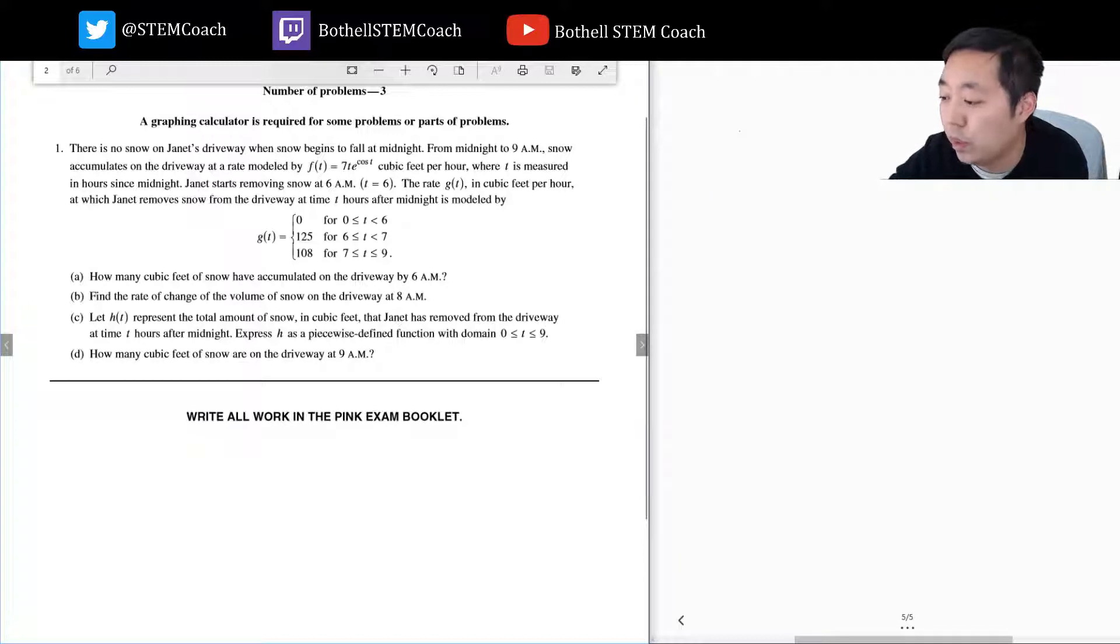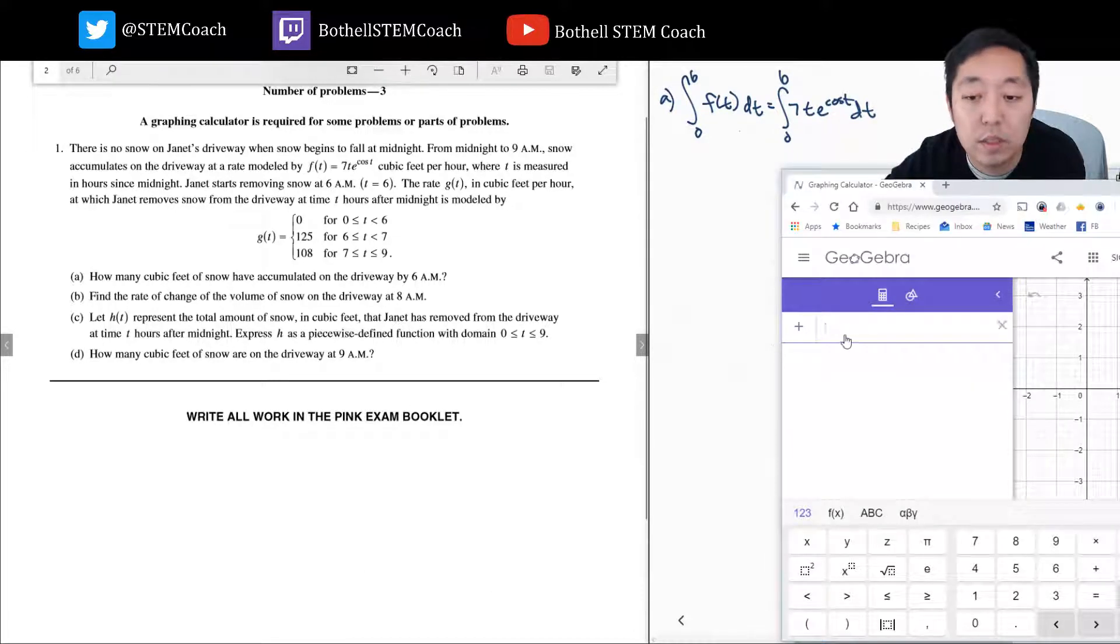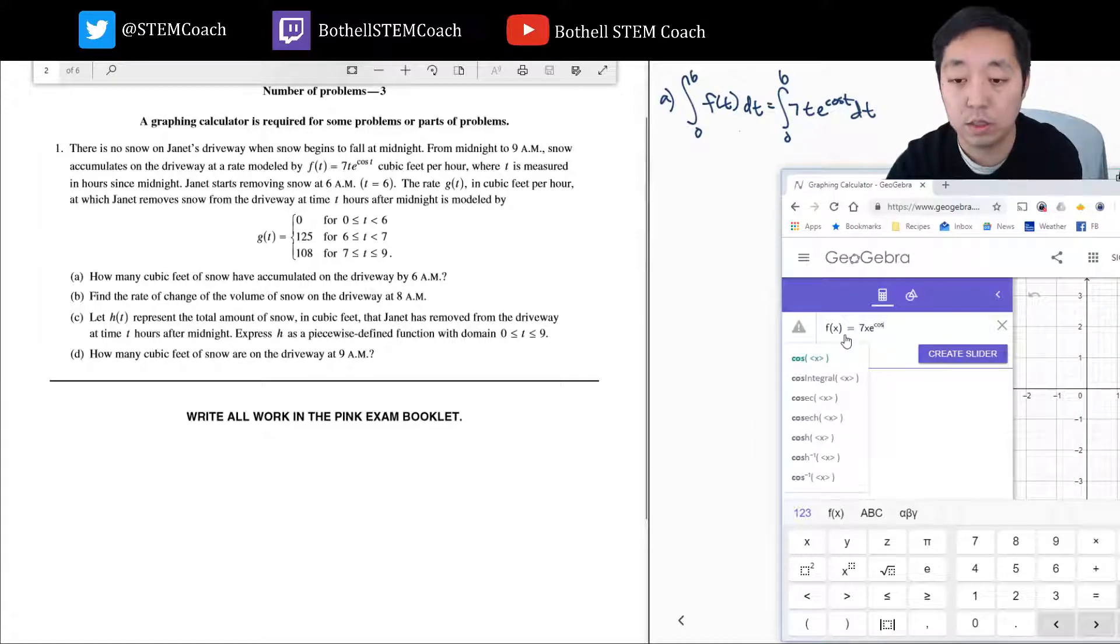So let me get this up. For part A, I want to do the integral - the accumulation is f(t) by 6 a.m. We're going to go from midnight to 6 a.m. So the integral from 0 to 6 of 7t e to the cosine t dt. Now use your favorite calculator program to do this one.